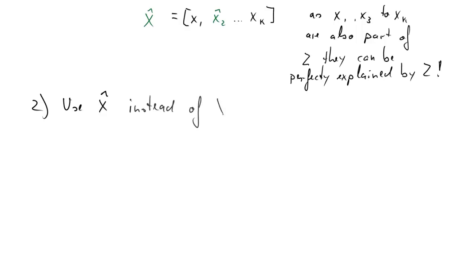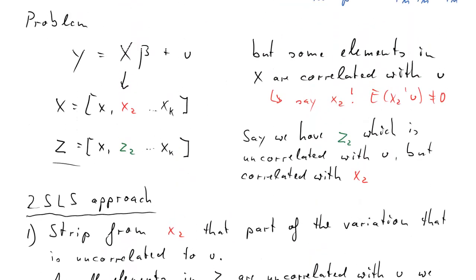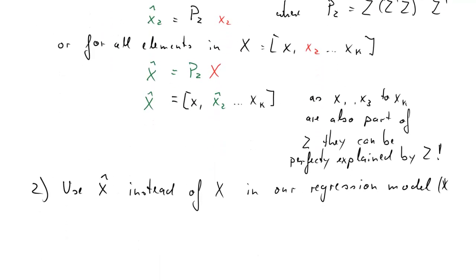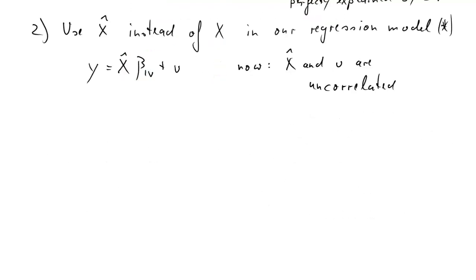So let's think about what the second step is. In the second step we use these X-hats, which really only differ from the X in that element which is correlated with the u. We are going to use that X-hat in our original problem. In that problem which I will label asterisks. And so we are going to use these X-hats instead of the X. So this is basically what we will estimate now. The coefficient will be different and I will therefore label it or give it a subscript IV, because in the end we will get our IV estimates.